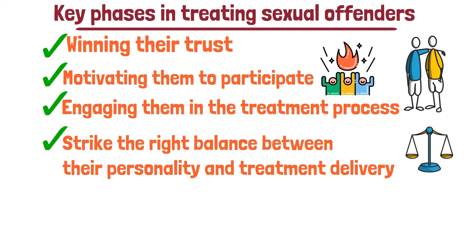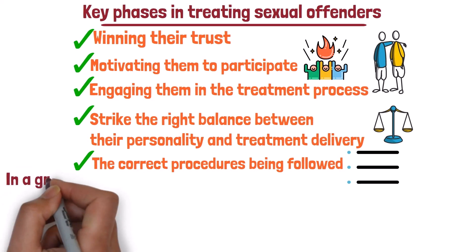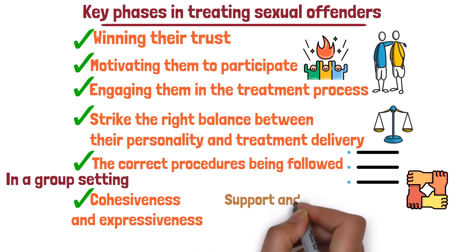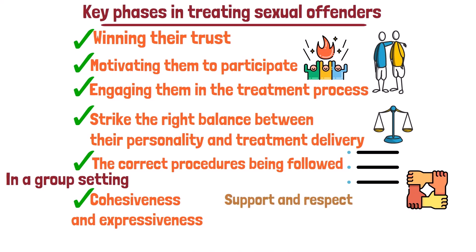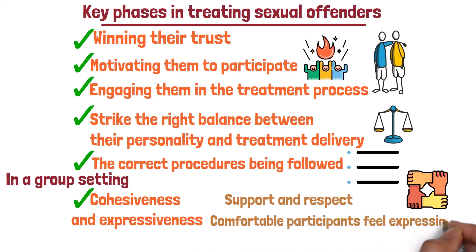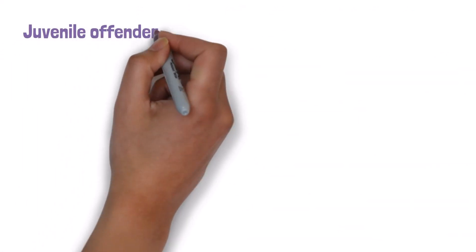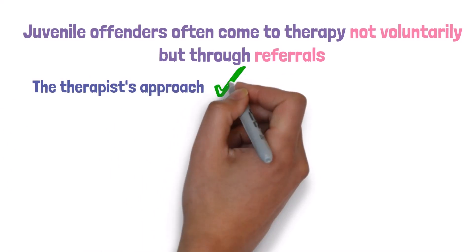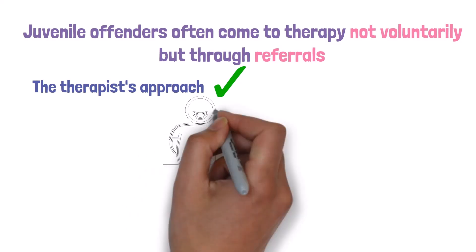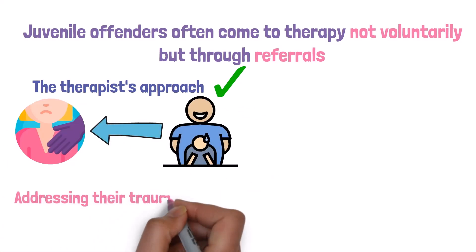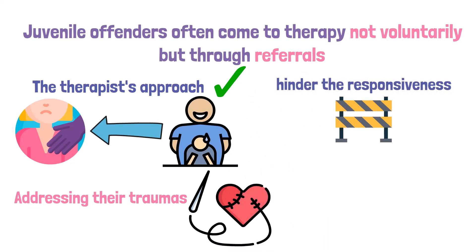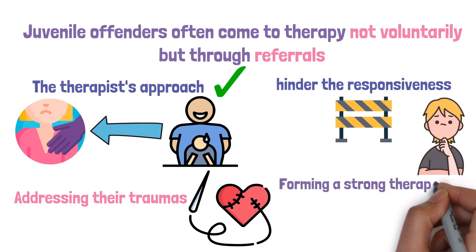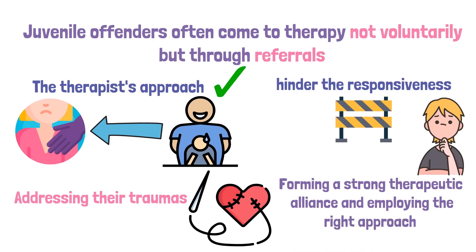The effectiveness of treatment also relies heavily on correct procedures in a group setting. Group cohesiveness — the degree of support and respect among members — and expressiveness — how comfortable participants feel sharing opinions — are important. Juvenile offenders often come to therapy through referrals rather than voluntarily, making the therapist's approach even more critical. Many youngsters who sexually offend may have experienced sexual abuse themselves, and traumatic symptoms can hinder treatment responsiveness, making a strong therapeutic alliance especially crucial with young offenders.